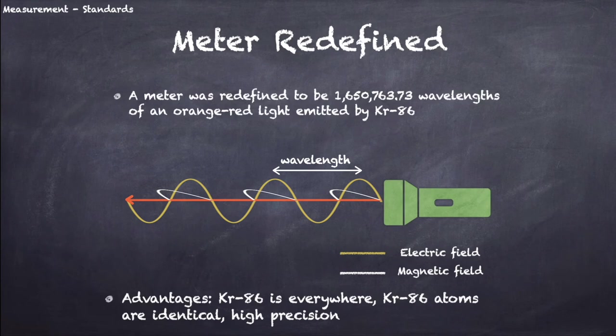Here are the advantages of using this standard. Krypton-86 can be found everywhere, so it is easily accessible. And any two Krypton-86 atoms are practically identical twins, so it is also invariable. Furthermore, these 9 digits here in the definition shows us the high precision that the KR86 standard possesses. Using this standard, you can tell the difference between a 0.123456789 meter long bacon from a 0.123456788 meter long bacon. Powerful, right?